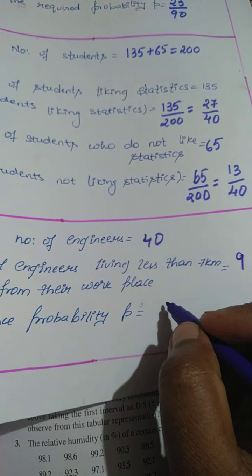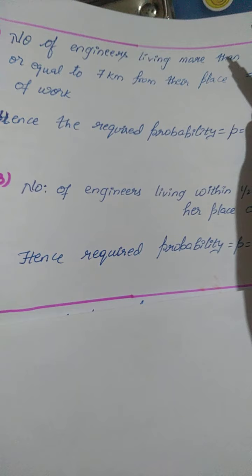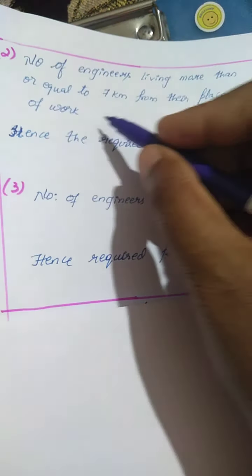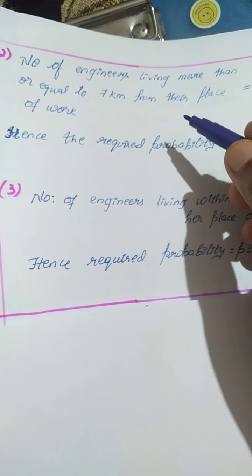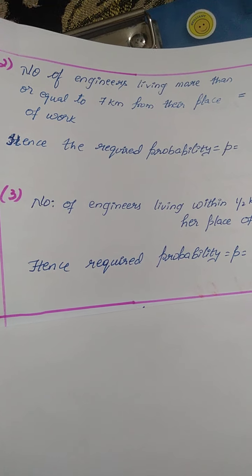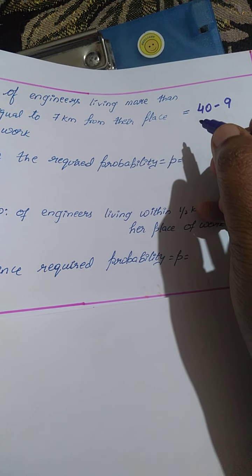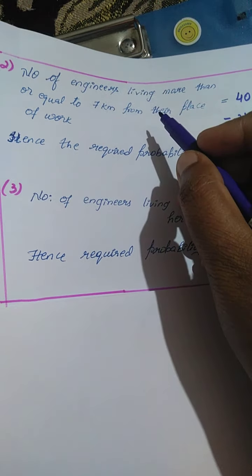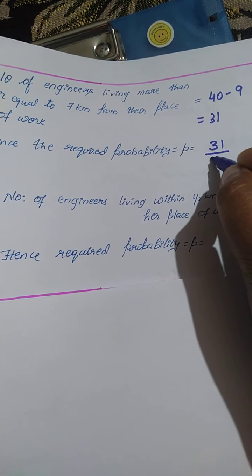And next, probability is 9 by 40. Your second question becomes more simple children. You have to calculate number of engineers leaving more than or equal to 7 kilometers from their place of work. Already we have calculated less than 7 kilometers. Now, you have to calculate 7 and more than 7. Hence, total is 40, I have to reduce 9. So, 40 minus 9 — on subtracting, I will get 31. So, 31 engineers are walking more than 7 kilometers. Hence, the required probability is 31 by 40.